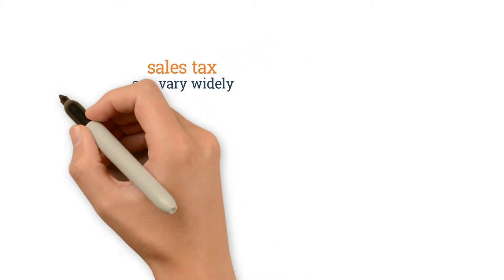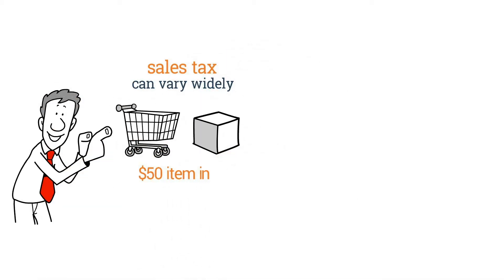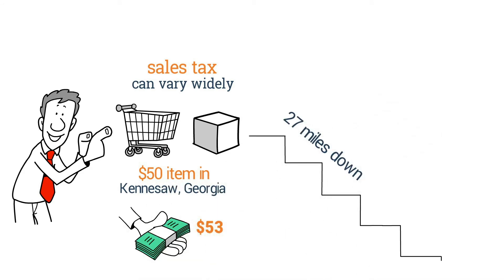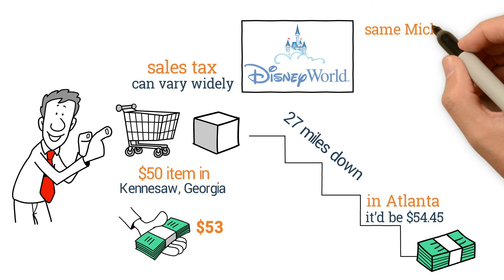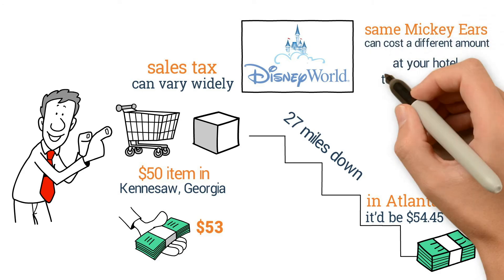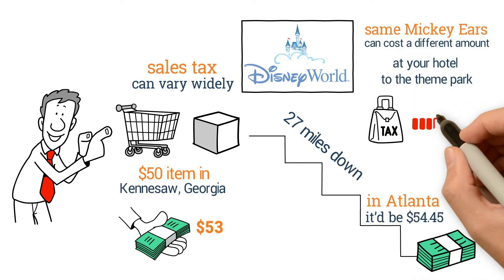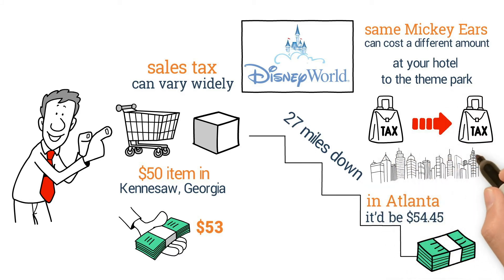And sales tax can vary widely. For example, if you bought a $50 item in Kennesaw, Georgia, it'd cost you $53, but just 27 miles down the road in Atlanta, it'd be $54.45. And at Walt Disney World, the same Mickey ears can cost a different amount at your hotel to the theme park because they're in two different sales tax zones. That's because most states allow counties, cities, and other local areas to levy a sales tax too.